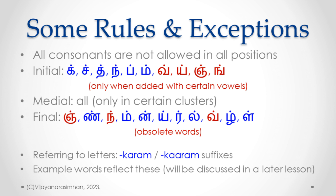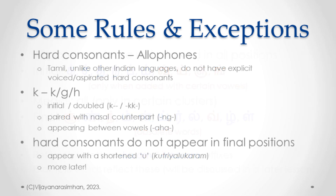Starting with the hard consonants — this is a frequently debated topic, because in almost all Indian languages except Tamil, there are families of hard consonants: Ka, Kha, Ga, Gha — four variants, voiced, aspirated, and so on, called Alpa Prana and Maha Prana variations. In Tamil there is only Ka, Cha, and so on — not Ka, Kha, Ga, Gha. But this is not a defect or deficiency in Tamil.